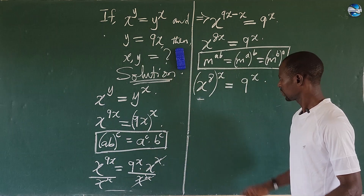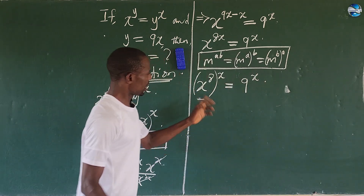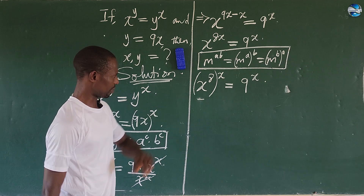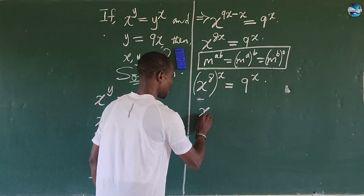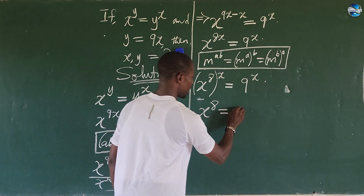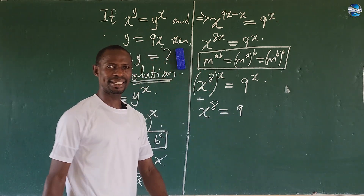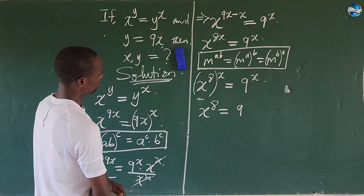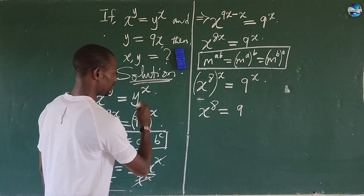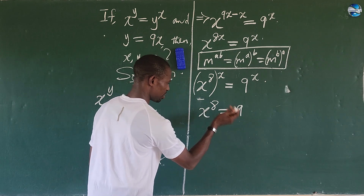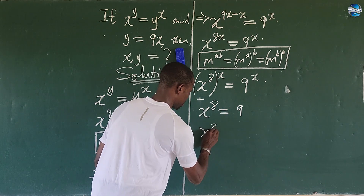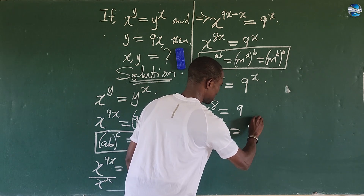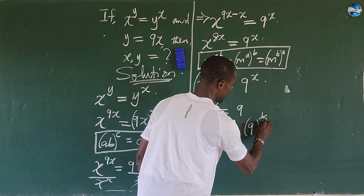From here we can observe that the exponents are the same on both sides — both are raised to the power of x. So we can equate the bases: x to the power of 8 equals 9. Now, we're looking for x, so we take the 8th root of both sides — that is, raise both sides to the power of 1 over 8.